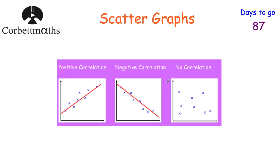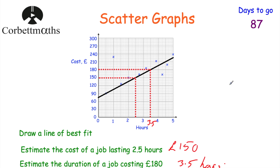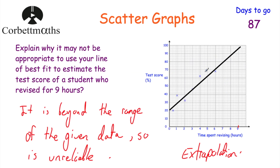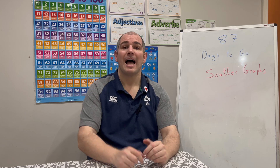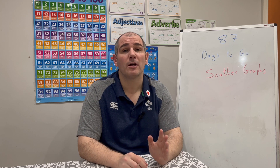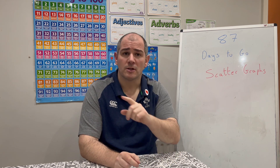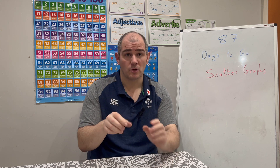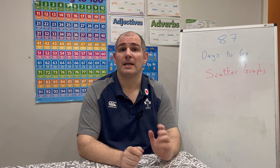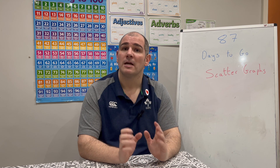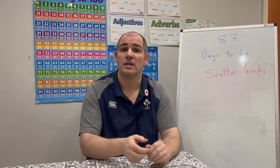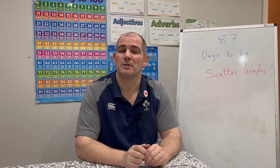In this video we've looked at scattergraphs — types of correlation, plotting points, drawing and using lines of best fit, outliers, reading scales, and when to be careful about using lines of best fit. I really hope you found it useful. In the description below there's a link to practice questions — it might be nice to print those off so you can do the scattergraph questions on paper. Keep up the hard work with 87 days to go until your GCSE maths exam. If you found this useful, please like it, subscribe to the YouTube channel, and I'll see you tomorrow at three o'clock — cheers, bye!